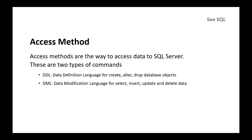Access methods are the ways to access data to or from SQL Server. There are two types of commands: DDL and DML. Data Definition Language (DDL) is used for create, alter, and drop database objects. Data Manipulation Language (DML) is used for select, insert, update, and delete operations on data.